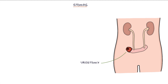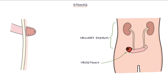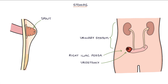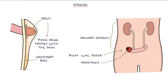A urostomy involves creating an opening from the urinary system onto the skin. Urostomies have a spout and are typically located in the right iliac fossa. The spout is used in order to avoid the urine coming into contact with the skin, so that the urine drains directly into the bag, as urine in contact with the skin will cause a lot of irritation.